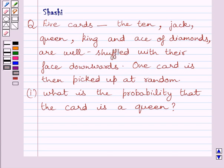Hi and welcome to the session. Let us discuss the following question. Five cards - the ten, jack, queen, king, and ace of diamonds - are well shuffled with their face downwards. One card is then picked up at random. What is the probability that the card is a queen?